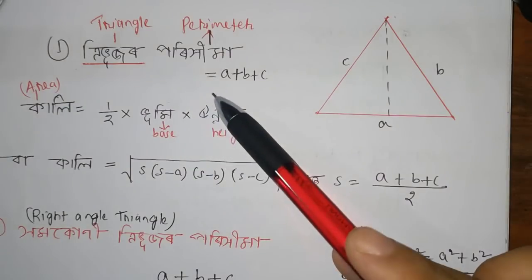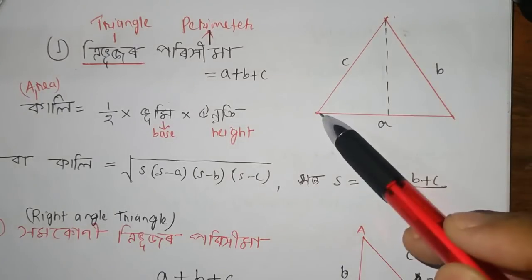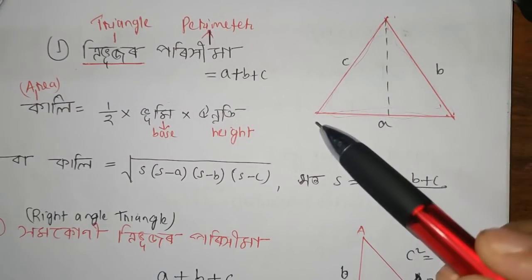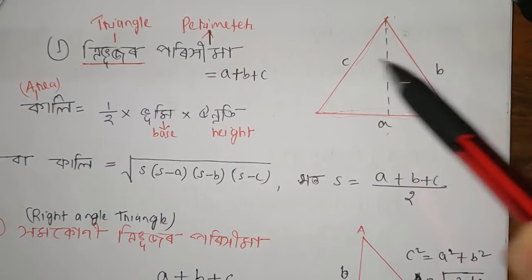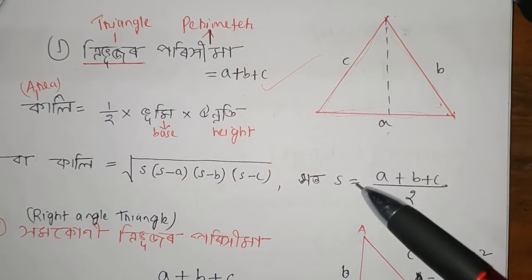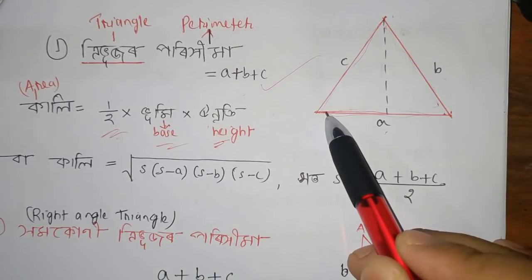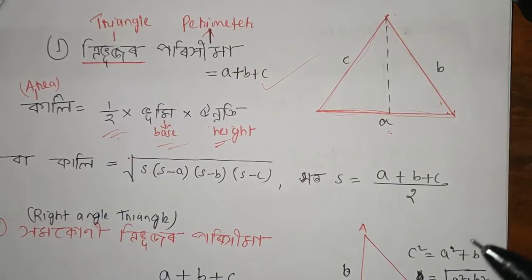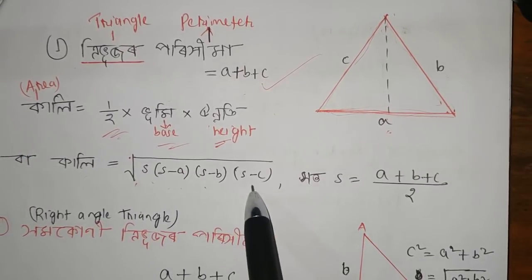We have a basic formula for the perimeter of a geometrical figure. The perimeter is a boundary concept — it is the sum of all sides. The area of a triangle is half into base into height. The formula using Heron's formula is: root over s into (s minus a) into (s minus b) into (s minus c).